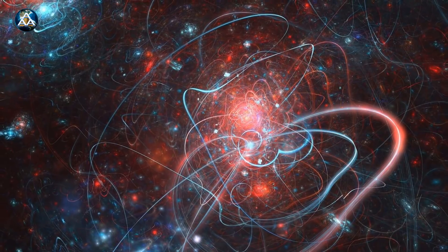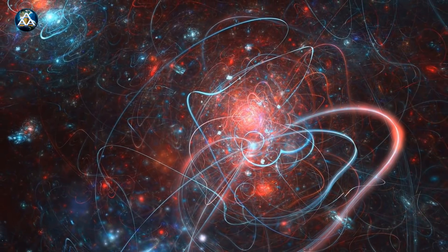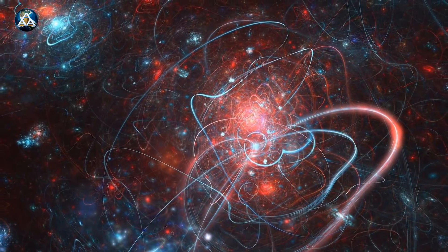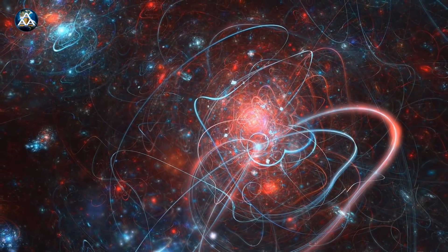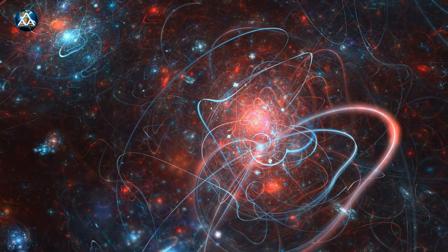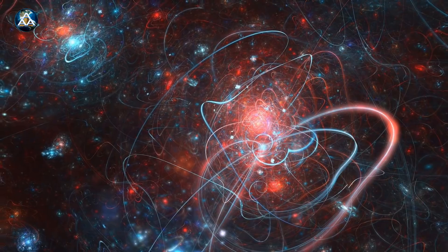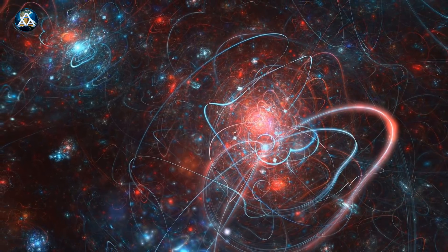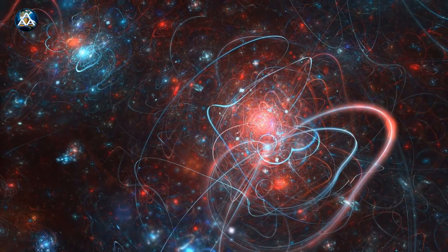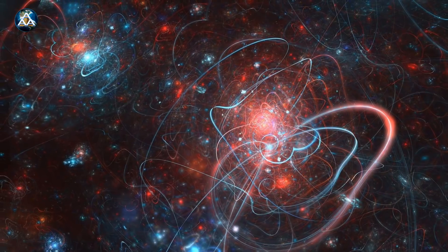In string theory, the holographic principle proposes that a volume of space can be described on a lower dimensional boundary, so the universe is like a hologram in which physical reality in 3D space can be mathematically reduced to 2D projections on their surfaces.